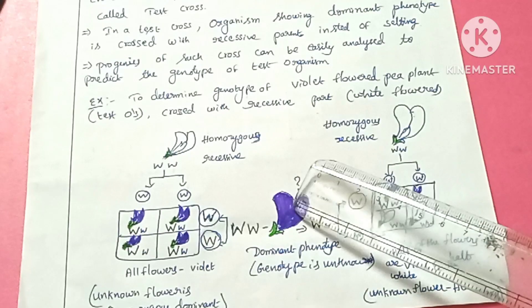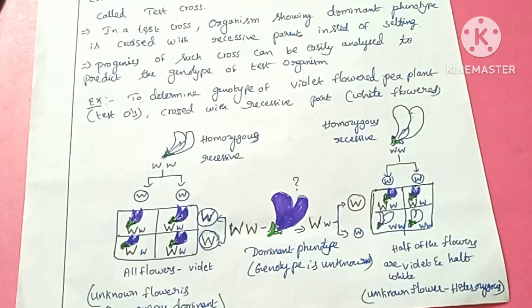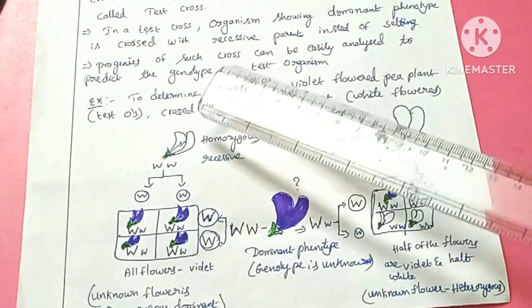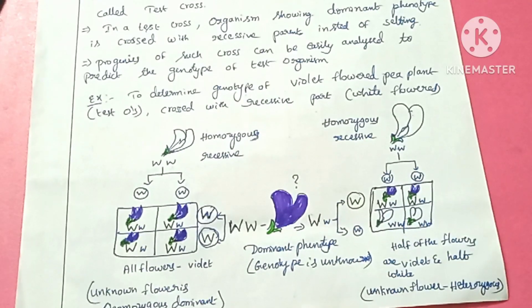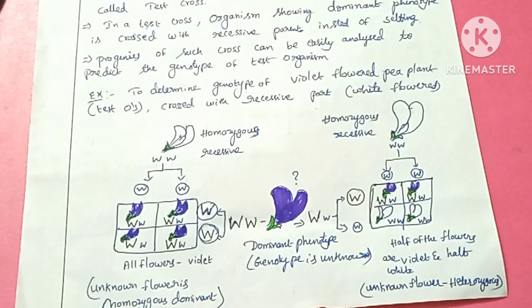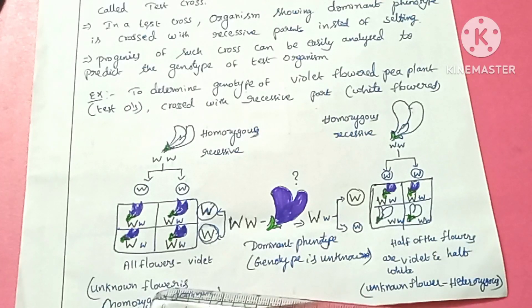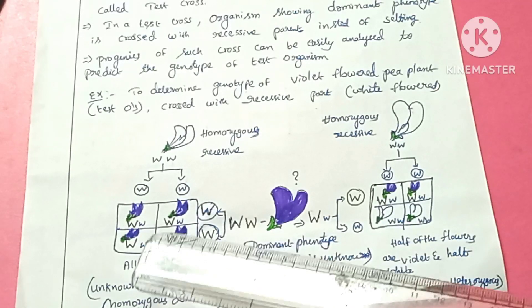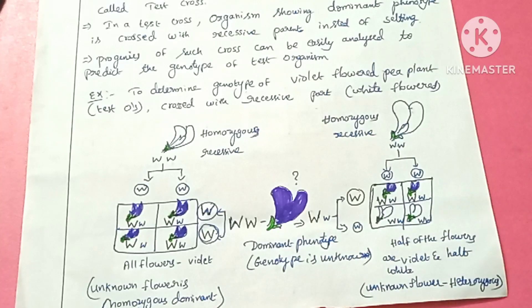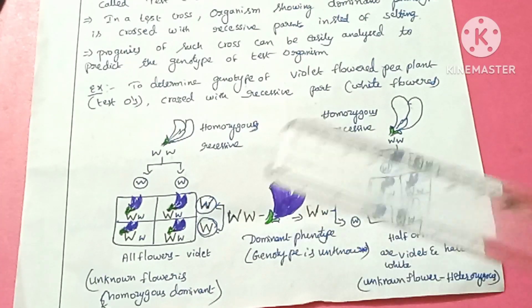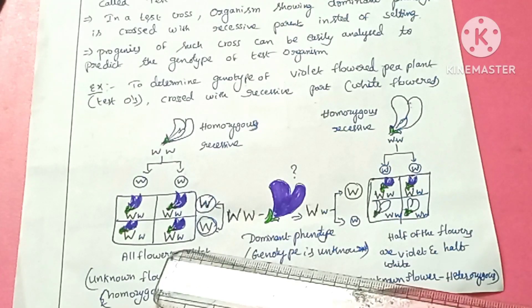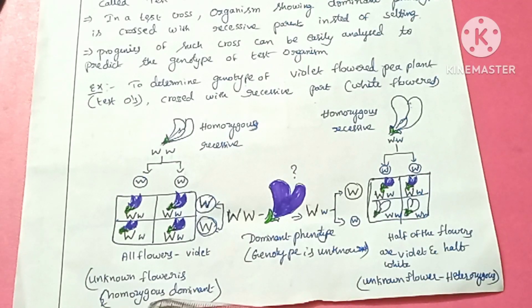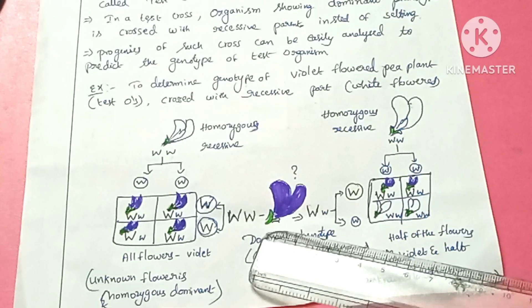The test plant may be homozygous or heterozygous. In the first case, if the test plant is homozygous dominant and we cross it with the homozygous recessive parent, all of the progeny produce only violet colored flowers. So the phenotypic ratio is all violet, and we predict that the unknown flower plant is the homozygous dominant.